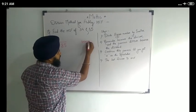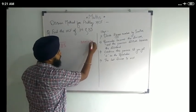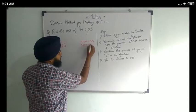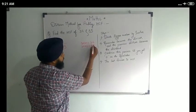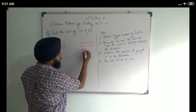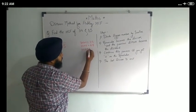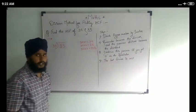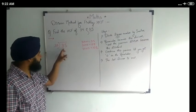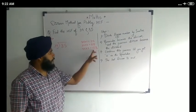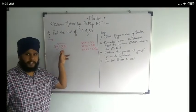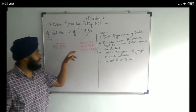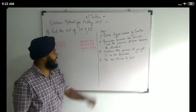So we write in division form and check the table of 34. 34 ones are 34. 34 twos are 68. 34 threes are 102. Here the dividend is 85, and 102 is greater than 85, so we cannot take it. We will take the smaller value, that is 68.